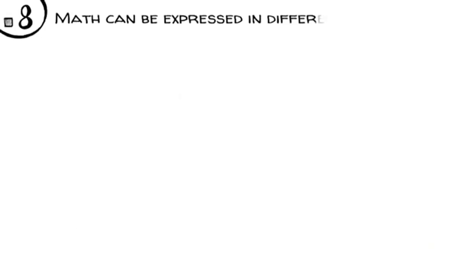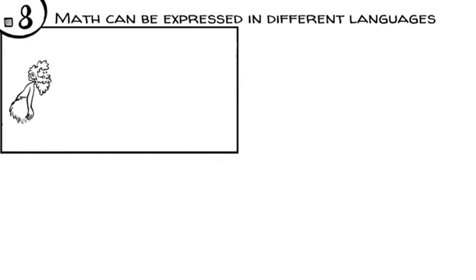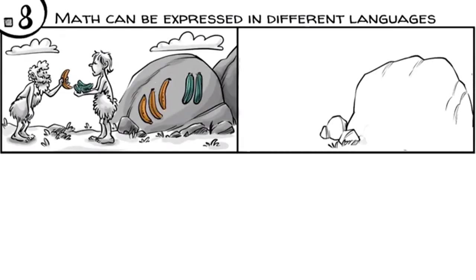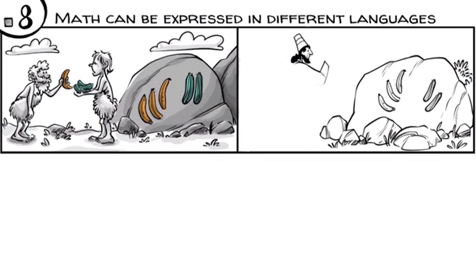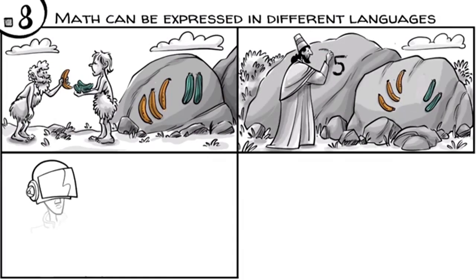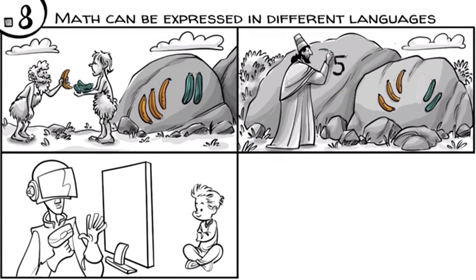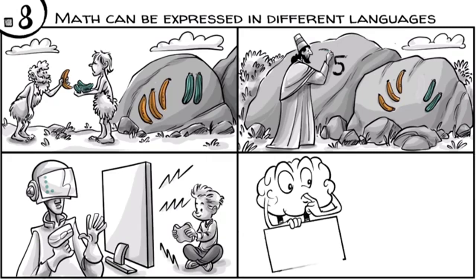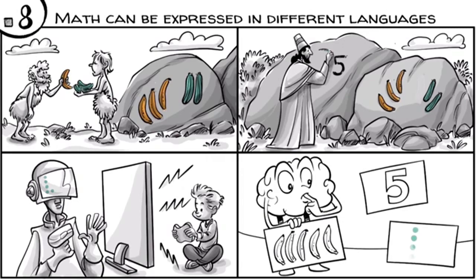Math can be expressed in different languages. A hundred thousand years ago, we used objects to express our mathematical thinking. Later, we used images. Around one thousand years ago, we began to reduce images to Arabic numeral symbols. In future, we might replace symbols with bits or express math in graphic simulations or games. In other words, while math thinking always happens in our heads, the language that represents our thinking is evolving.